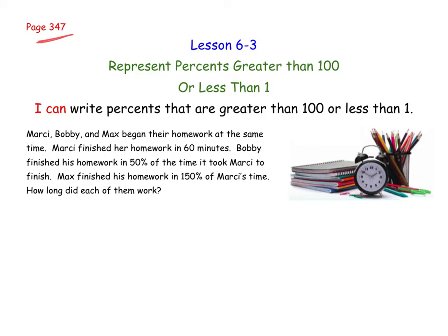Let's start off with our solve and discuss it. Marcy, Bobby, and Max began their homework at the same time. Marcy finished her homework in 60 minutes. Bobby finished his homework in 50% of the time it took Marcy to finish. Max finished his homework in 150% of Marcy's time. So we're trying to figure out how long did each of them work.